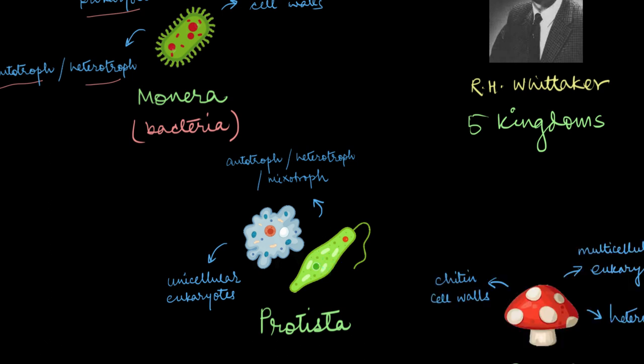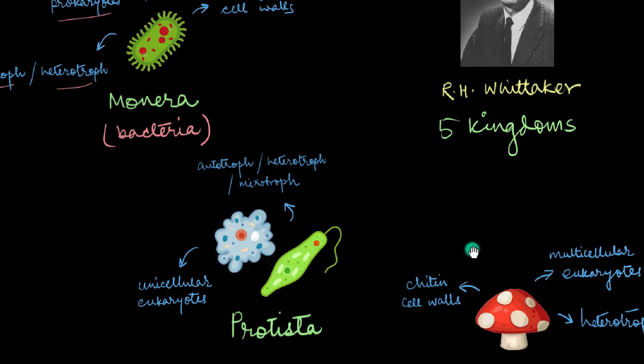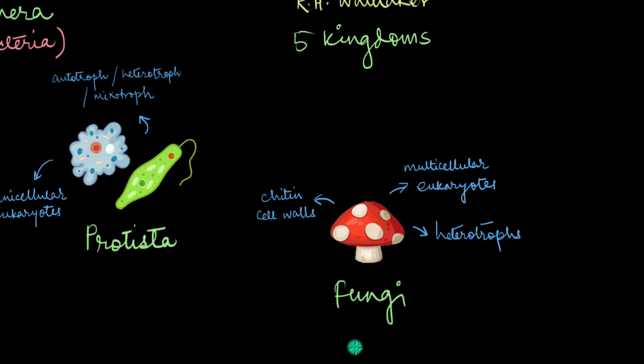The third kingdom is where the mushrooms are, Kingdom Fungi. Now both fungi and plants are multicellular eukaryotes. But a major difference between them lies in their cell walls. A fungal cell wall is made up of a compound called chitin.